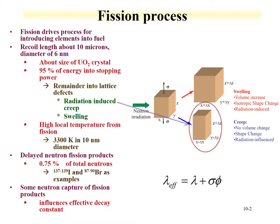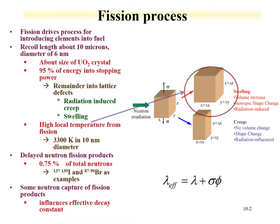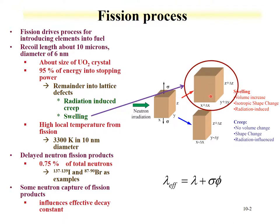One effect is radiation-induced creep, where there is no volume change but a shape change — something can elongate. This can happen with, for instance, uranium metal where, if it was in cladding, it could elongate and breach the top of the cladding. Another effect is swelling, which is a volume increase. Within the lattice you would have defects that increase size and swell the material. This could also be due to accumulation of lattice defects increasing the overall dimensions.